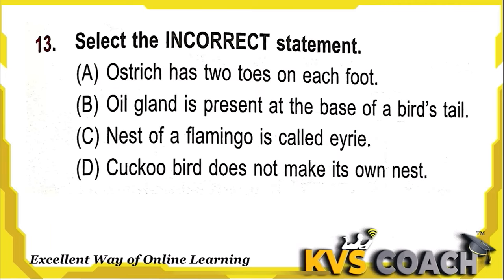Next question: select the incorrect statement. Ostrich has two toes on each foot — correct. An oil gland is present at the base of a bird's tail — correct. The nest of a flamingo is called an eyrie — wrong! An eyrie is the nest of an eagle, not a flamingo. Flamingo lives in or near water. Cuckoo bird does not make its own nest — this is correct. So the incorrect statement is Option C.